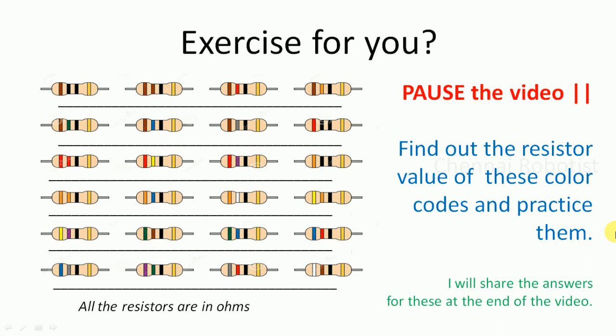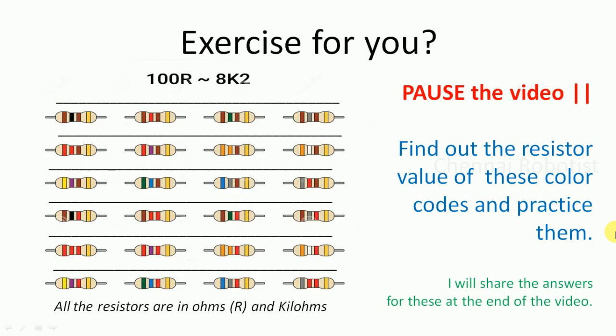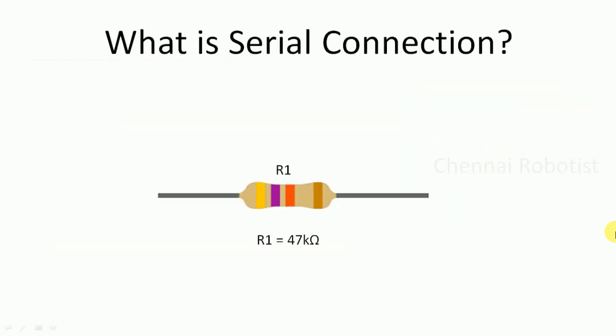Pause the video and work out those exercises — it's very important to practice reading color codes. Here is a second level of exercises where the values are mixed in ohms and kilohms. Work them out and at the end of the video I'll display the answers so you can cross-check.